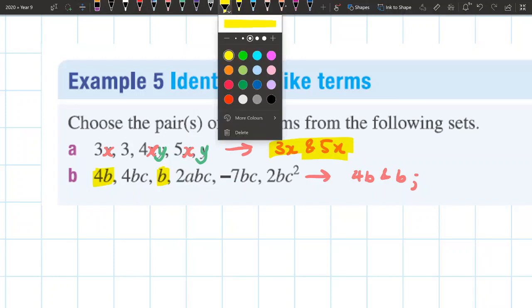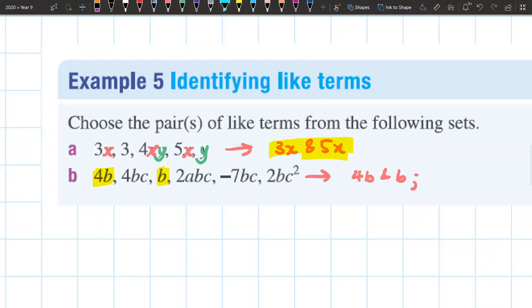Let's look through to see if there's any other ones here. I'm going to look at my 4bc. Are there any other terms that have just b and c in it? 2abc, no, there's an a in it. I don't want that. -7bc, oh nice, I have another term that just has bc as a pronumeral factor. So my second set that I'm going to form here is 4bc and -7bc.